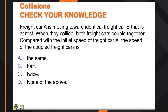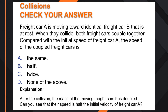Let's check understanding: a freight car A is moving toward an identical freight car B at rest. When they collide, both freight cars couple together. Compared with the initial speed of freight car A, the speed of the coupled freight cars would be — well, if it has an identical mass, we've doubled the mass, so the velocity has to be cut in half.